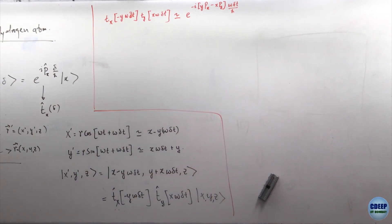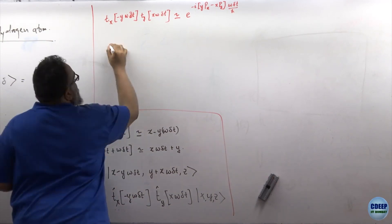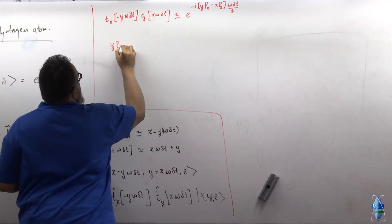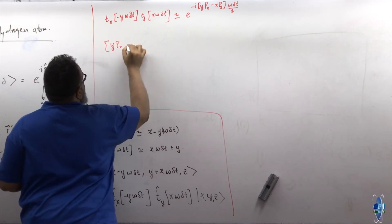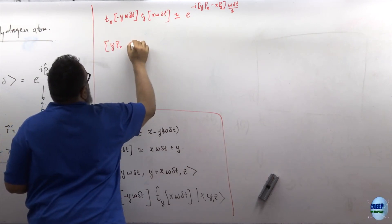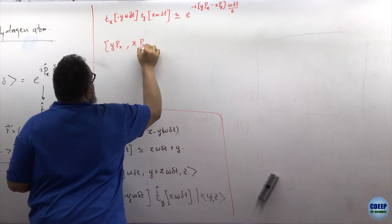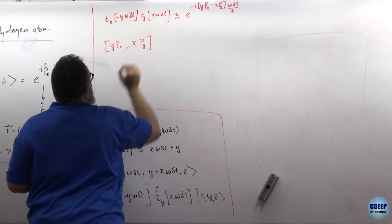So you can write T_x of minus y·omega·delta·t times T_y of x·omega·delta·t, which can approximately be written as e to the minus i times (y·P_x minus x·P_y) times omega·delta·t over h-bar. The point is there are second-order terms because y·P_x does not commute with x·P_y.